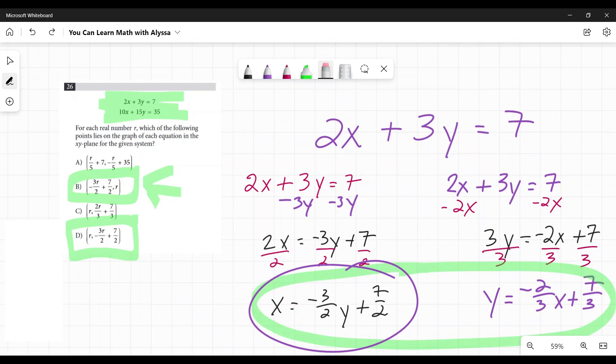What would happen if I replace that y with an r? What would my coordinates be for a point of r? r would be my y value. So this would be r. And what happens? What would my x value be? My x value is negative 3 halves times r plus 7 halves. And looky there.